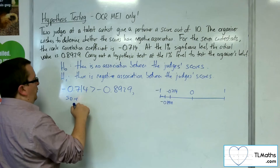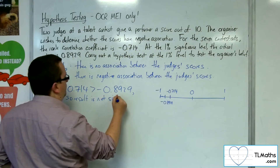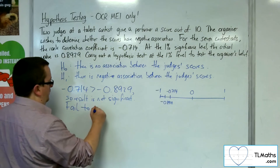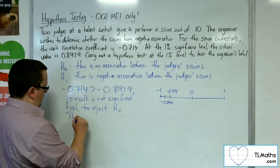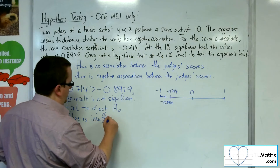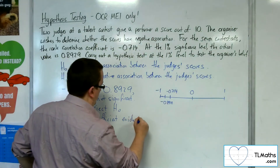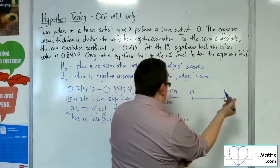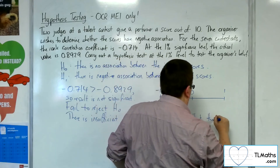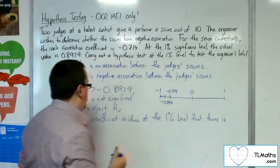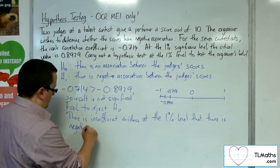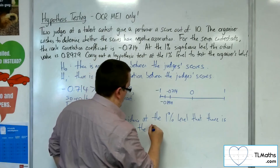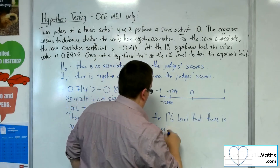So the result is not significant, and we fail to reject H0. There is insufficient evidence at the 1% level that there is negative association between the judges' scores.